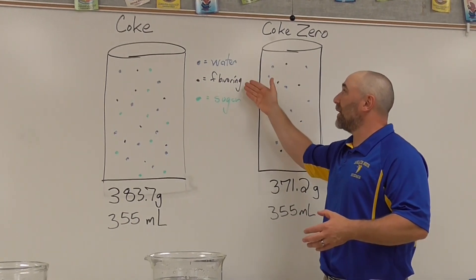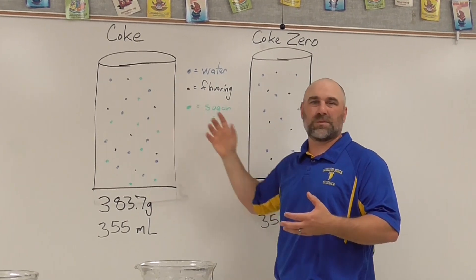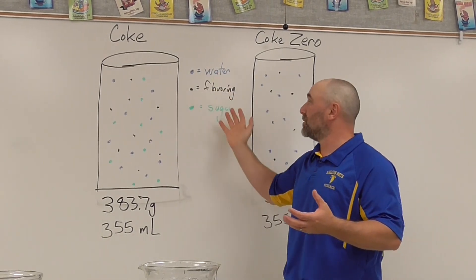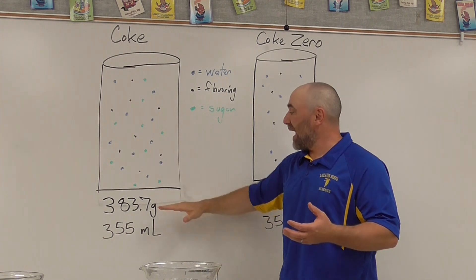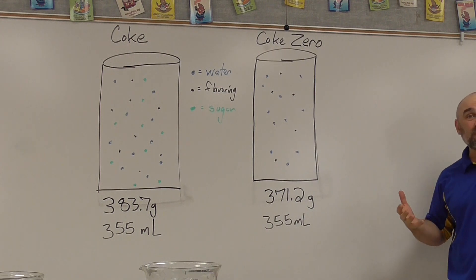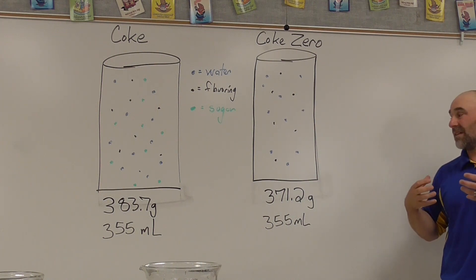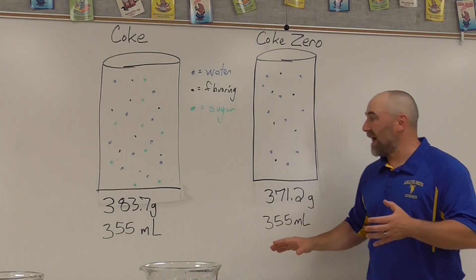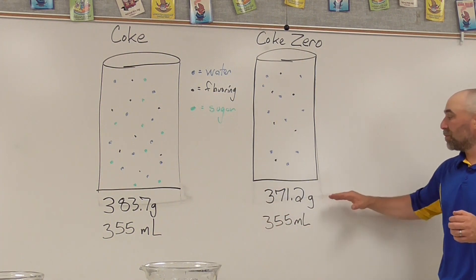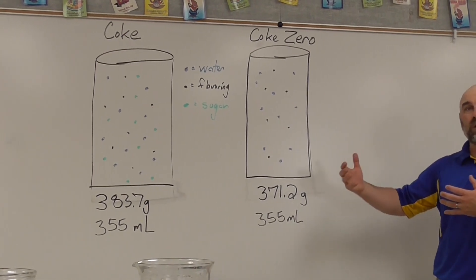Both Coke and Coke Zero have water and flavoring, but Coke Zero — the zero stands for zero sugar. It's missing those sugar particles; they're replaced with aspartame, a flavoring where a little tiny packet is equivalent to all of the grams and grams of sugar present in a Coke. And that difference in mass — 383 grams versus 371 grams — is the difference in density between the two. This mass is inside the can, so the mass of the can itself will be slightly larger, large enough that the Coca-Cola has a density slightly greater than 1.0 grams per milliliter, while the Coke Zero has a density slightly less than 1.0 grams per milliliter.